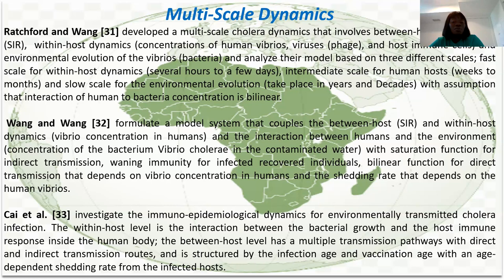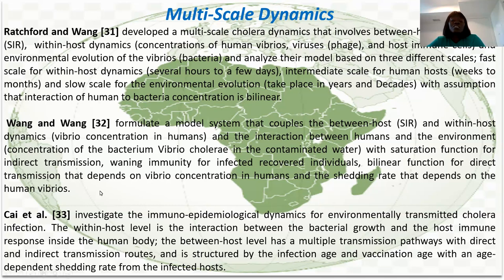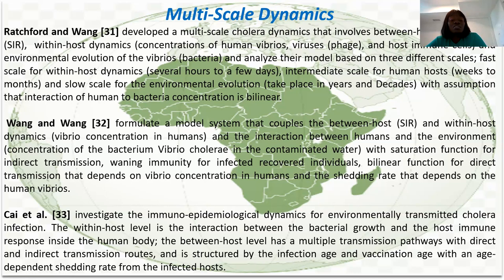Another SIR model (reference 32) also looked at within-host and between-host dynamics combined with environmental equations. One key difference is that this model considered a saturation function for indirect transmission and waning immunity for people who recover. They used a bilinear function for direct transmission, which depends on the concentration in the human body and the shedding rate — and the shedding rate was not a constant parameter but depended on the bacteria the human had.